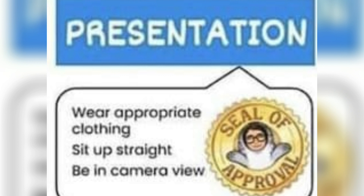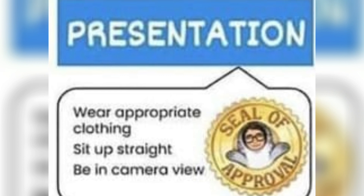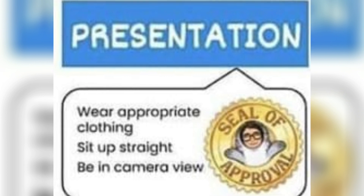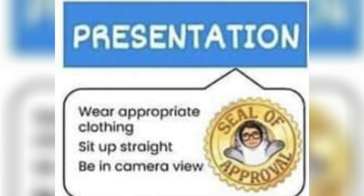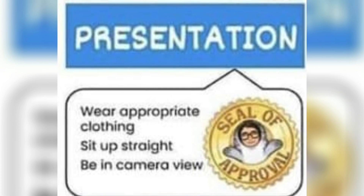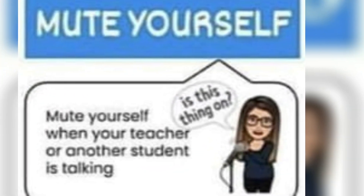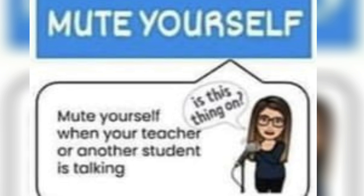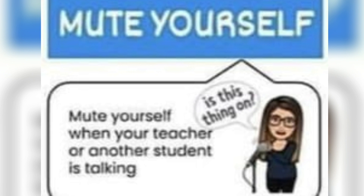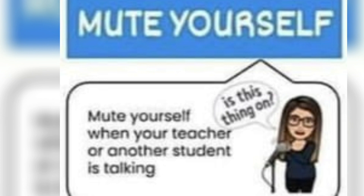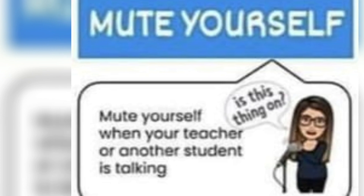The next point is your presentation. Presentation means your appearance — how you are appearing in front of your teacher. That means you should be wearing proper clothing and the posture of sitting should be straight. Don't lie down on the sofa or bed to attend your classes. This is very important: you should know when to mute yourself and when to unmute yourself. Whenever your teacher is giving the lecture or talking to another student, please mute yourself. You just wait for your turn to unmute.